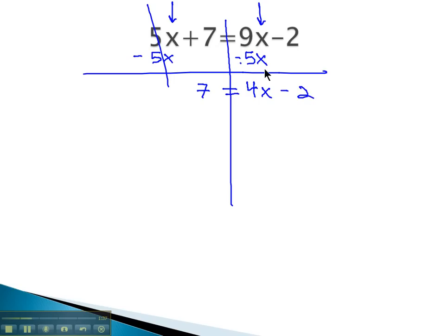Notice as I did this, I lined up the like terms. I lined up the x's so that they could be combined and leave that negative 2 alone. It's just going to come straight down.